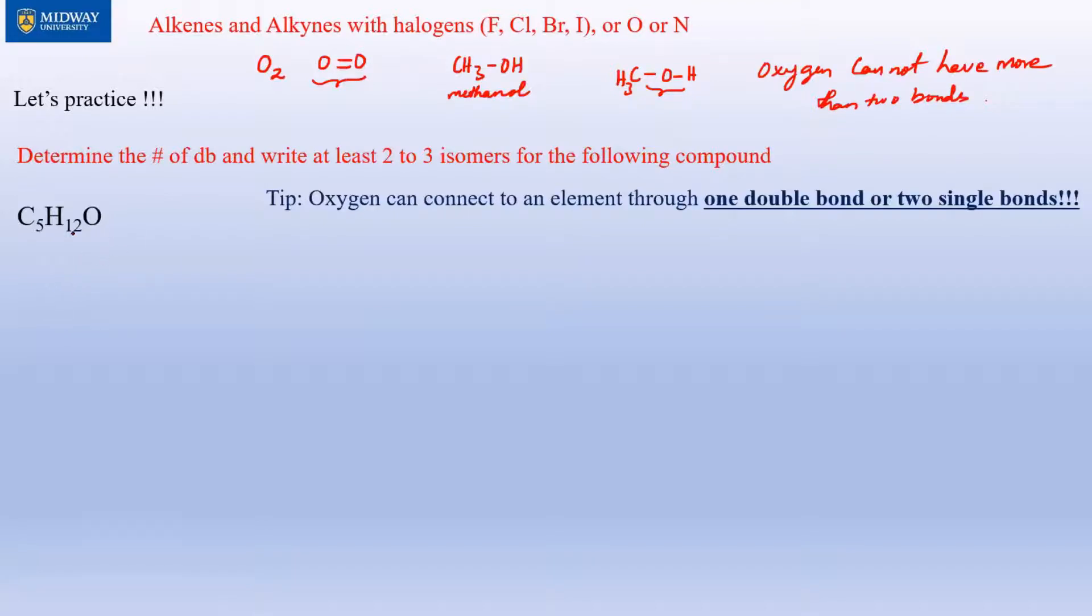As with the previous case, you write the general formula of an alkane: CnH2n+2. You put the number of carbons, so that's C5H12, that's your original. Your given would be C5H12O. This is your given compound.